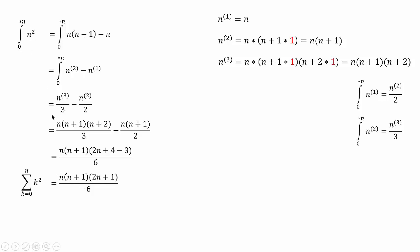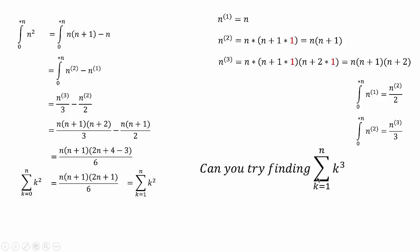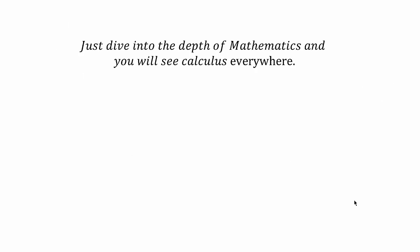After substituting the values — since n cubed with parenthesis equals n(n+1)(n+2) and n squared with parenthesis equals n(n+1) — and simplifying, we reach the final result. This is the summation from 0 to n of n squared. Since the first term at 0 is always 0, the summation from 0 to n equals the summation from 1 to n, giving us the required formula. Using the same method, can you try finding the summation of n cubed from 1 to n? Dive into the depth of mathematics and you will see calculus everywhere!